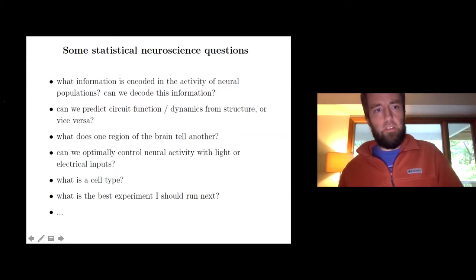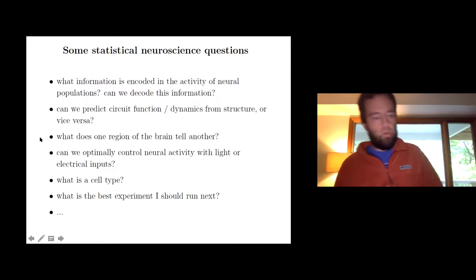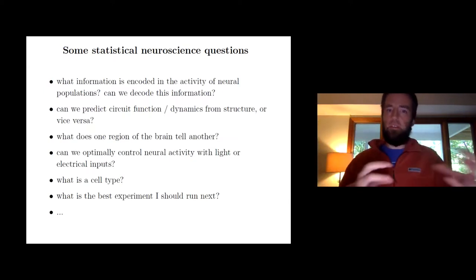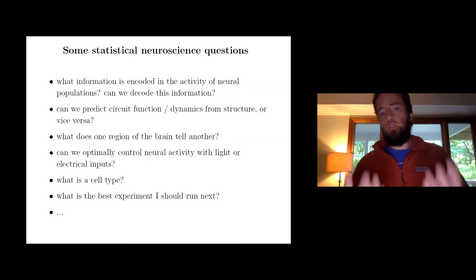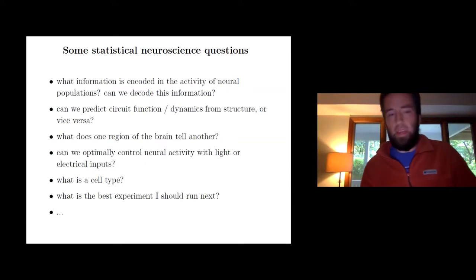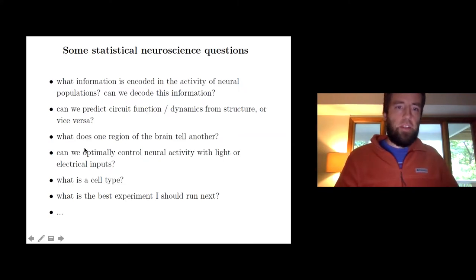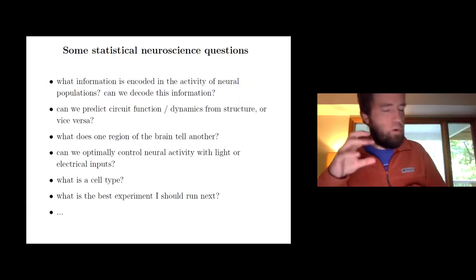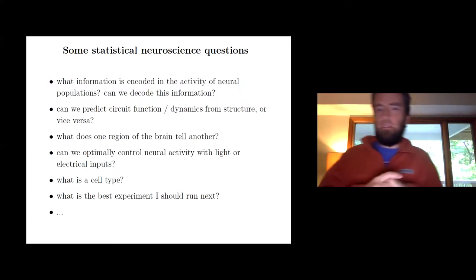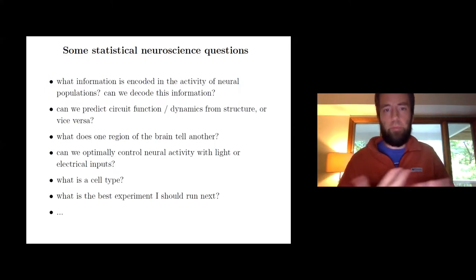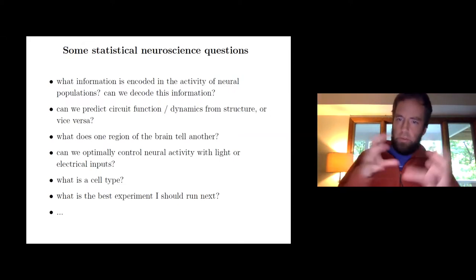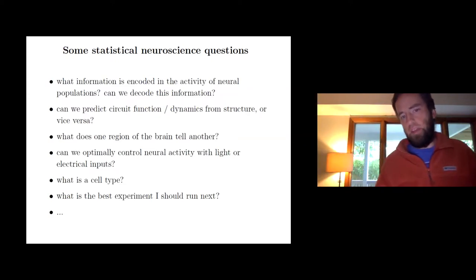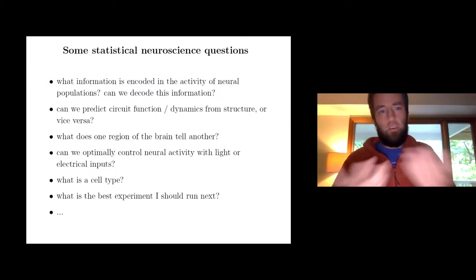Now that we have the technology to record from multiple regions of the brain simultaneously, one of the really interesting questions is to figure out how the dynamics of one brain area impact the dynamics of another, and what kind of cool circuit models can be built that are constrained by data. I already mentioned optogenetics, and of course you can also perturb the brain with magnetic or electrical stimuli.